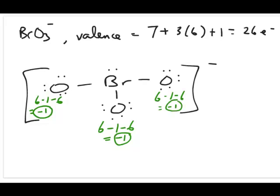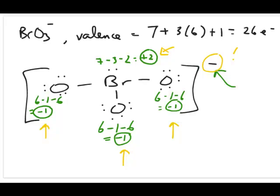For bromine: the free atom has seven valence electrons. There are three bonds totaling six bonding electrons, so six divided by two equals three. The lone pair on bromine is two electrons. So: seven minus three minus two equals positive two. Checking: positive two plus negative one plus negative one plus negative one equals negative one, which matches the overall charge of the ion.